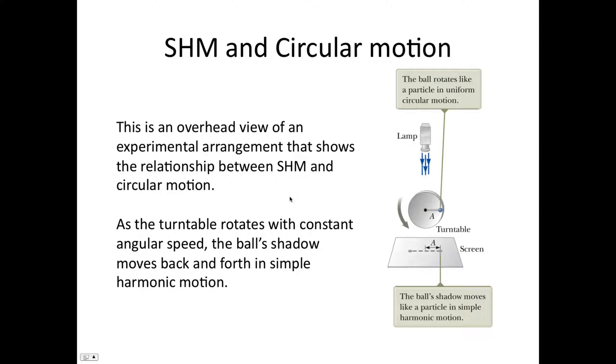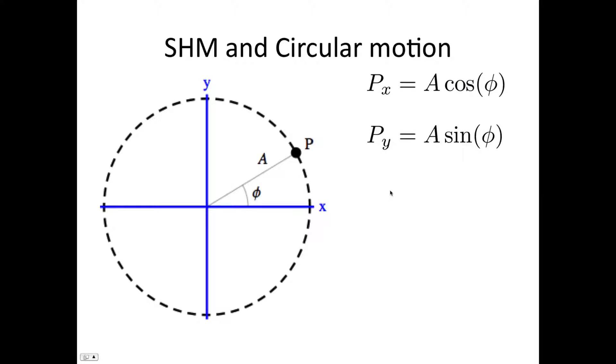We're going to prove that now. So imagine point P here. It makes an angle phi with the x-axis. This is a circle. The radius of the circle is capital A, standing for the amplitude, but it's also the radius.